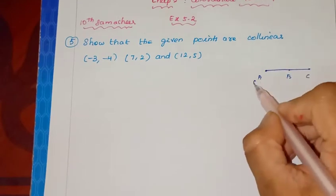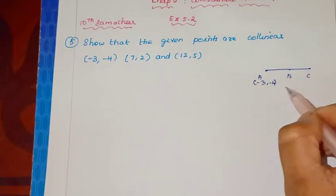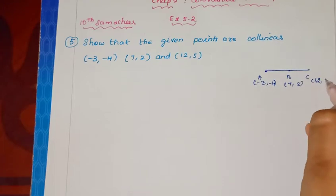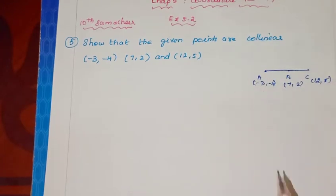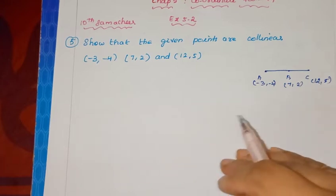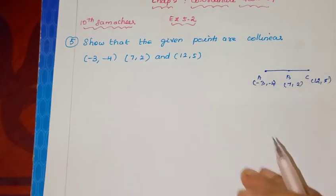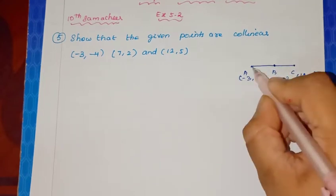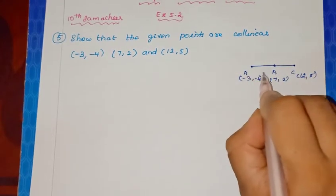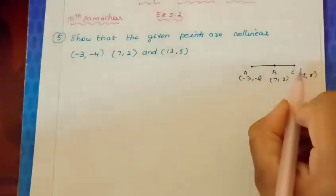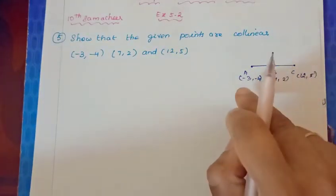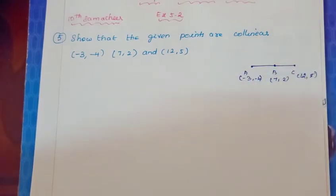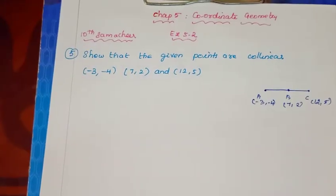So suppose A is (-3, -4), B is (7, 2), C is (12, 5). If you plot them, you will have a straight line, either horizontal or vertical or slanting. Just to understand what is collinearity. When all the points are forming a straight line, then only you will get that points are collinear.